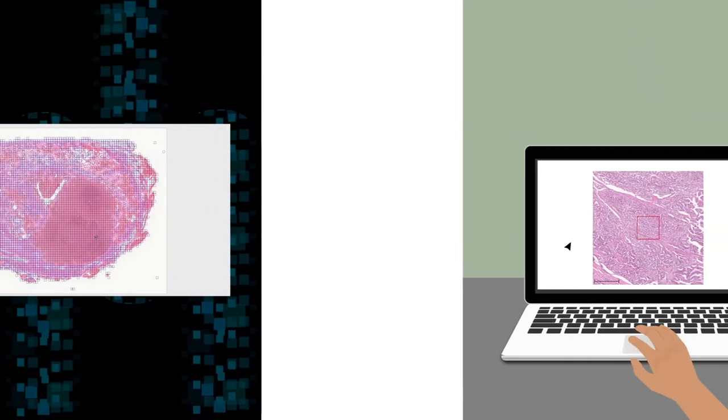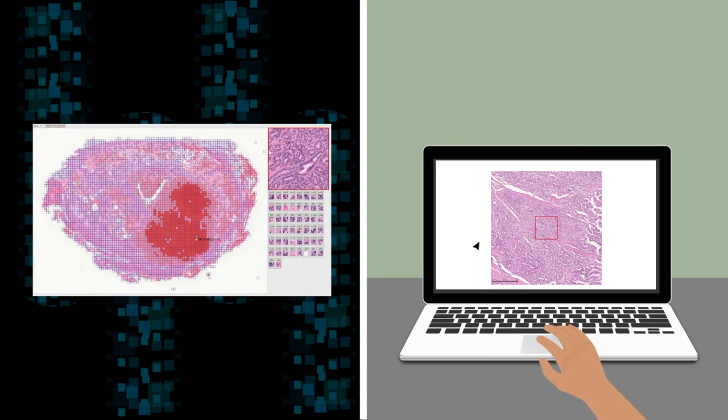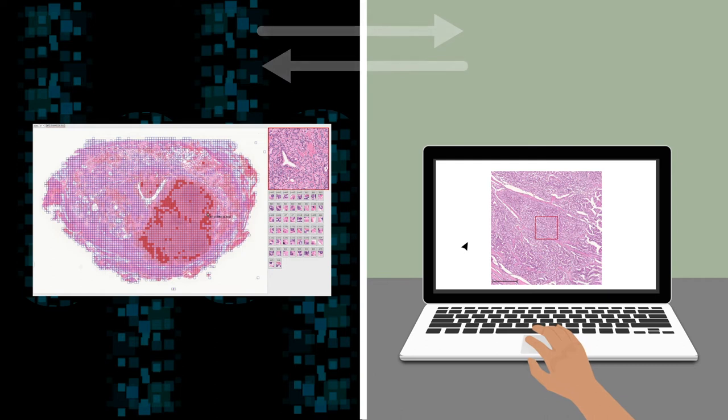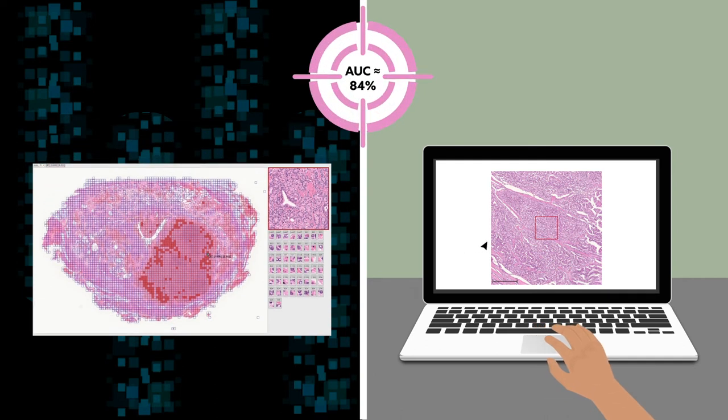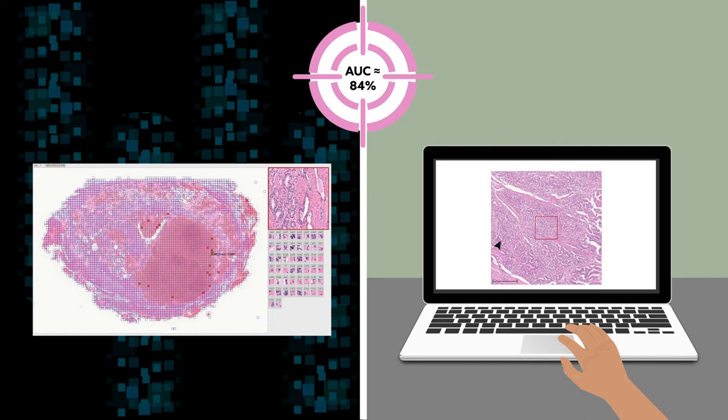While certainly robust, the new system won't replace human analysis anytime soon. The more likely scenario is a close partnership between human and machine. Together, the RIKIN team system and human pathologists scored a prognosis accuracy of 84%, higher than either alone.